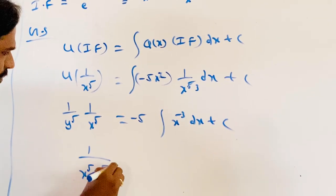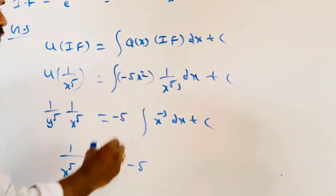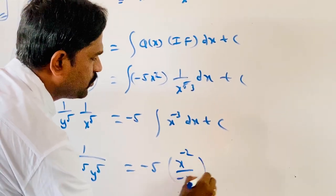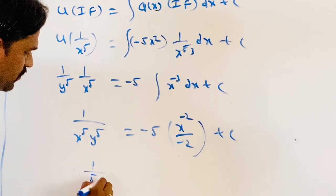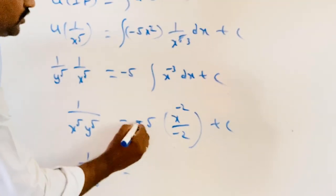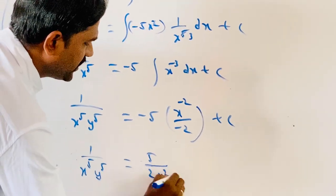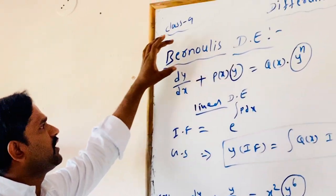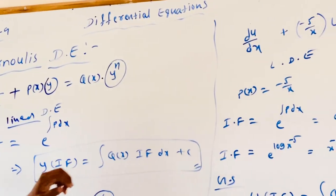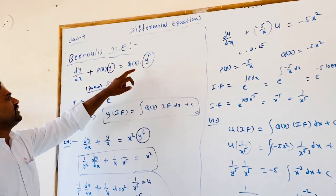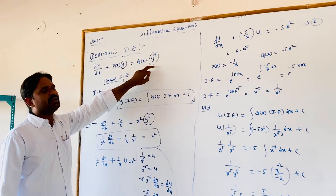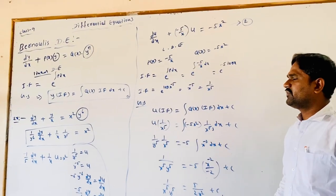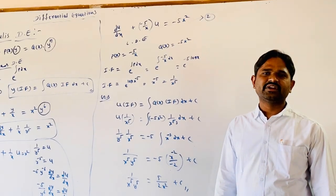Then, substituting back u = 1/y⁵, we get (1/y⁵)(1/x⁵) equals 5/(2x²) plus C. This is the solution of the given Bernoulli differential equation. The Bernoulli equation is converted into a linear differential equation by dividing out the y^n term and using substitution. In the next class, we will discuss about exact differential equations. Thank you.